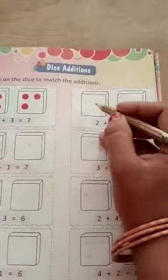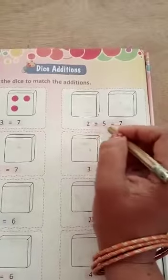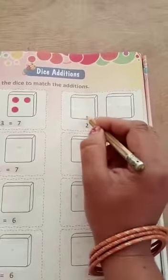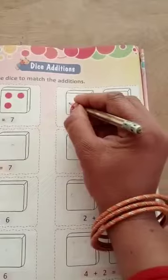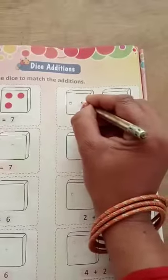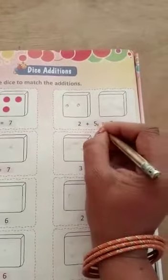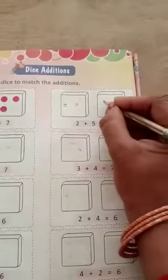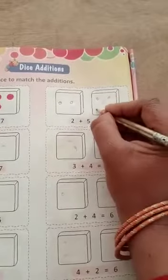Next, look at the same way. 2 plus 5. So 1, 2, 3.